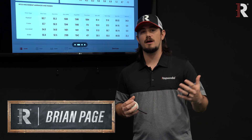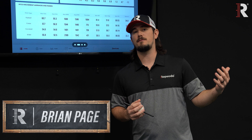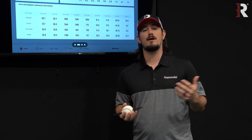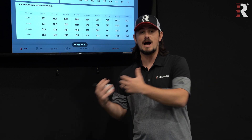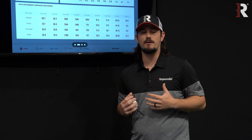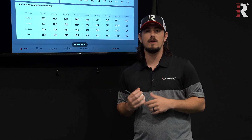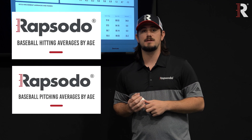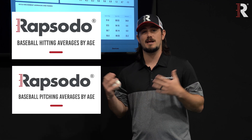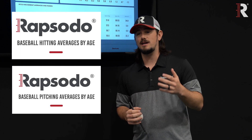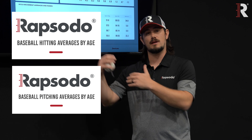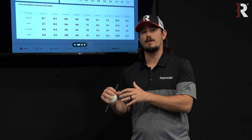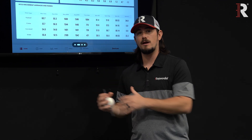One of the first places to start after you've established a baseline is understanding when a player has a naturally high versus low spin rate. One of the ways you can see that is with our data guides, to see for that player's age level — whether that's high school or certain levels of college — what the average spin rate is for that grouping.